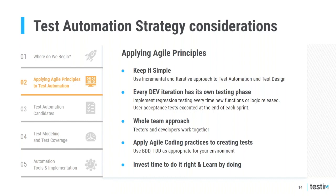Test automation is a team effort — you need a whole-team approach. Everyone on the team needs to be on board regardless of their role, and expectations from testing must be clearly outlined. Delivering a functional feature requires total team effort and quality needs to be baked in from the beginning, including making the software testable. Testing shouldn't be an activity done only at the end of the sprint by a single tester — it should be part of the whole process.